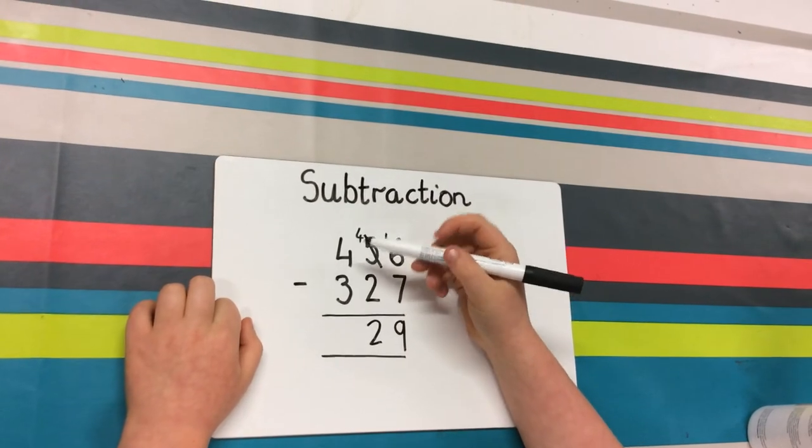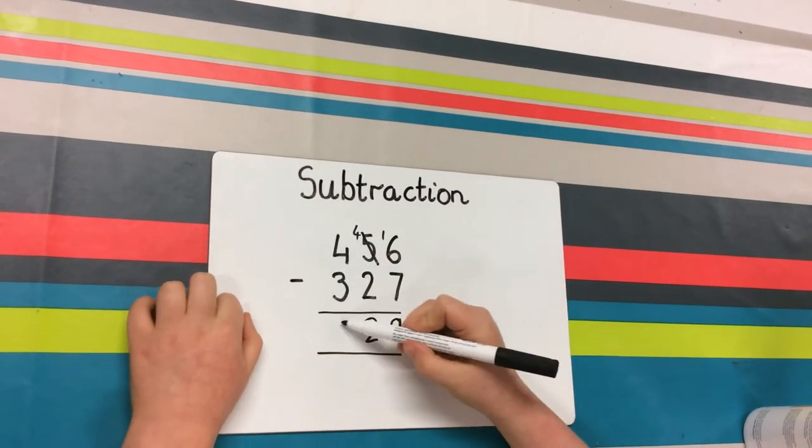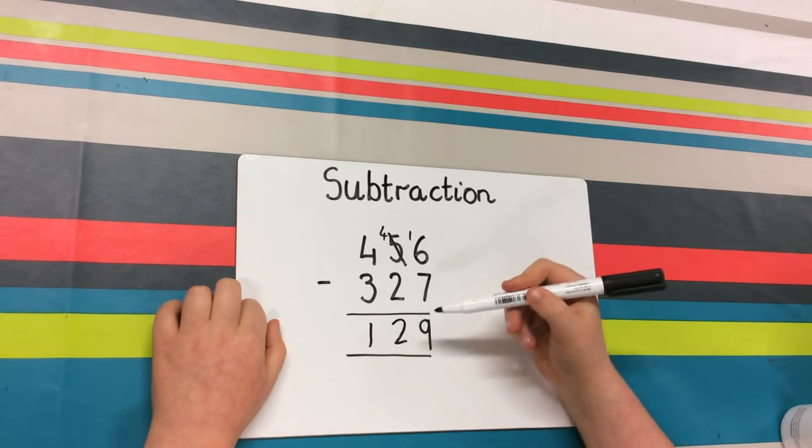And last but not least, 4 minus 3 is 1. And there is your answer, 129.